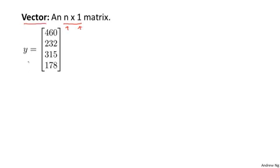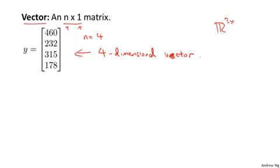Here's an example of a vector with n equals four elements. We call this a four-dimensional vector. It just means a vector with four elements, with four numbers in it. Just as earlier for matrices, you saw notation like R3 by 2 to refer to 3 by 2 matrices. For this vector, we refer to this as a vector in the set R4. This R4 just means a set of all four-dimensional vectors.